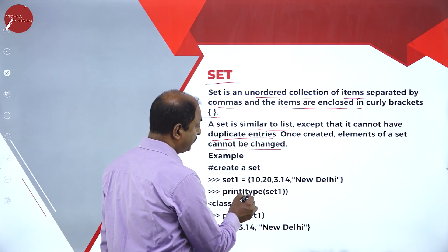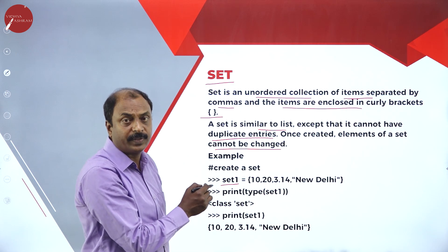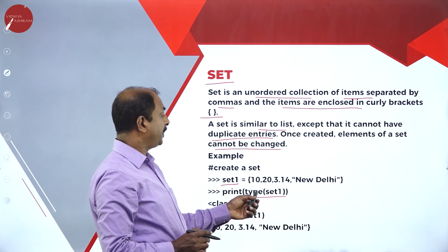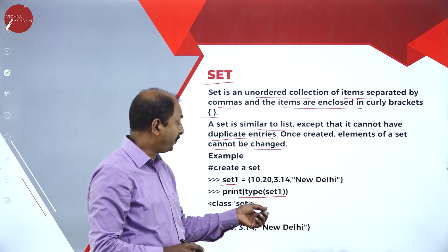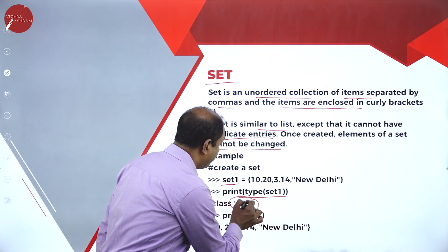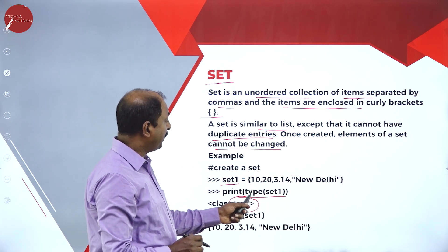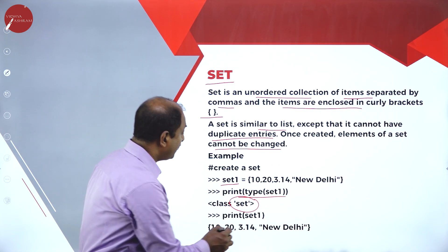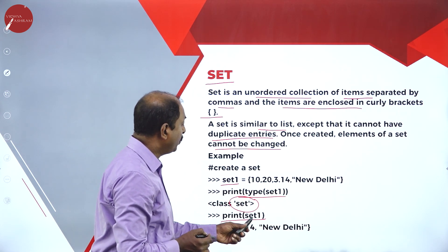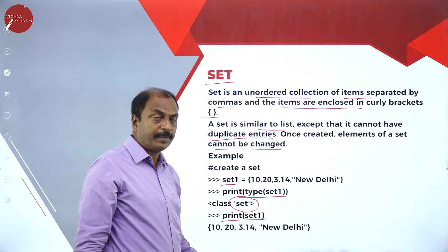Look at the example: set1 equals the values in curly brackets. Set1 is the name of the set — it is an identifier. Now: print type set1. Here type is a command — it is going to display the data type of set1. The result will be 'class set', meaning the data type of set1 is set. And print set1 will display the values of set1 on the screen. This is one of the data types in Python — set.